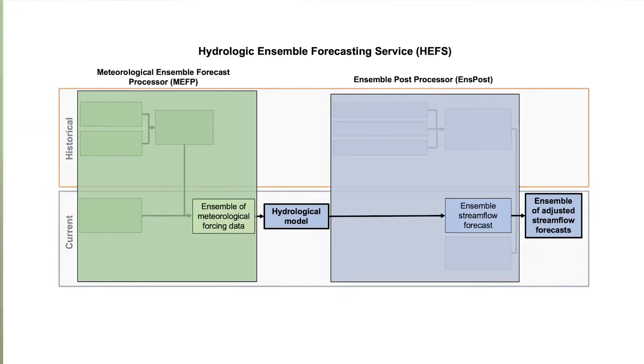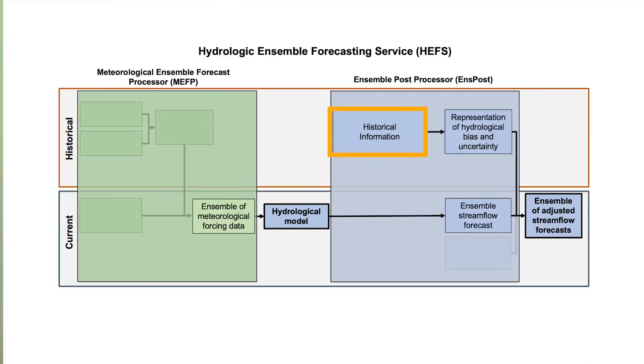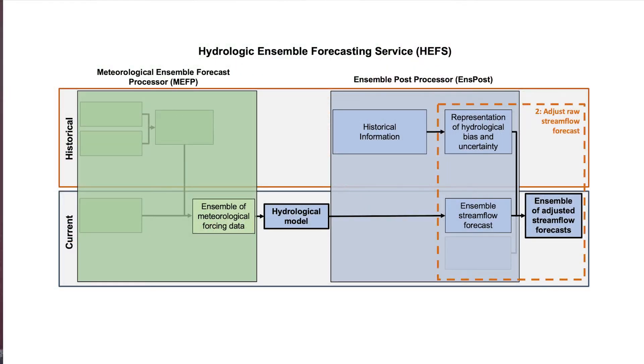ONSPOST has two steps. The first involves building a representation of historical hydrological uncertainty and bias — that is, learning from the past. In this step, ONSPOST looks at the accuracy of the hydrological modeling over a long historical period and attempts to learn from this information. The second step involves adjusting the current ensemble streamflow forecast based on this representation, since past hydrological modeling errors are a guide to future hydrological modeling errors.